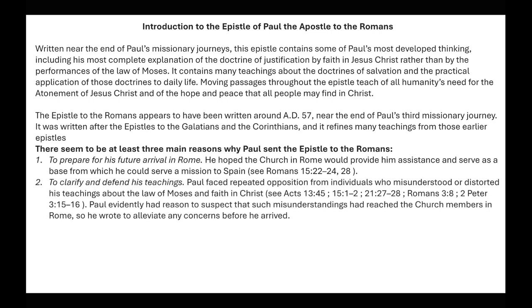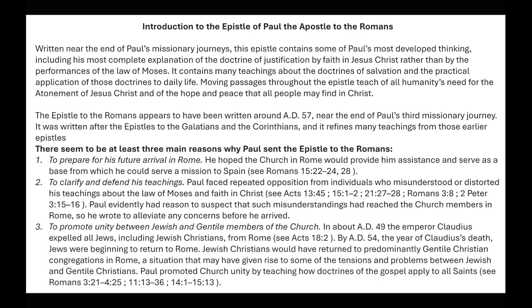Number two: to clarify and defend his teachings. Paul faced repeated opposition from individuals who misunderstood or distorted his teachings about the law of Moses and faith in Christ. He evidently had reason to suspect that such misunderstanding had reached the church members in Rome, so he wrote to alleviate any concerns before his arrival. Number three: to promote unity between Jewish and Gentile members of the church. In about AD 49, the emperor Claudius expelled all Jews, including Jewish Christians, from Rome. By AD 54, Jews were beginning to return to Rome.